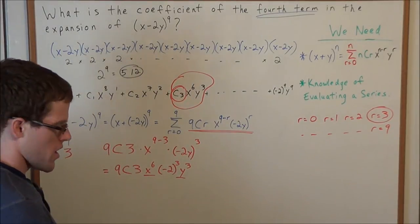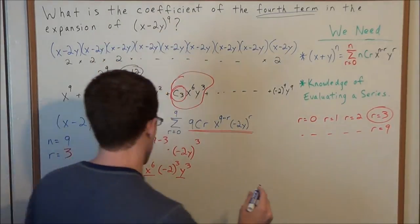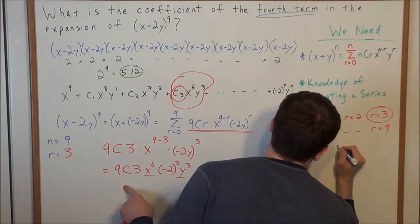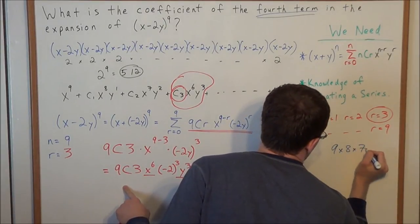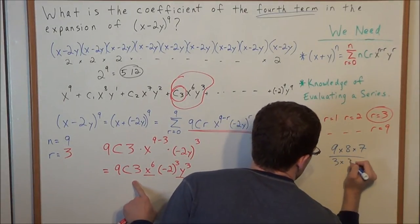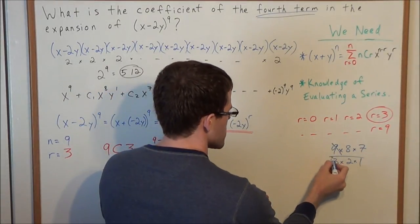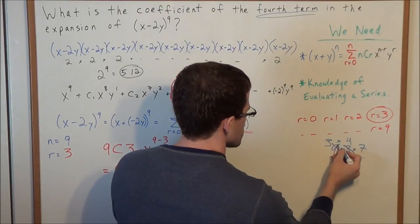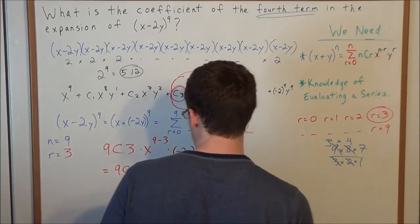Now we just need to evaluate 9C3. We could use a calculator, but I'll use the definition. 9C3, or nine combination three, tells us to list three factors starting at nine — so nine times eight times seven — and divide by three factorial, which is three times two times one. Nine divided by three is three, eight divided by two is four, so we have three times four times seven, which is twelve times seven, which is eighty-four.